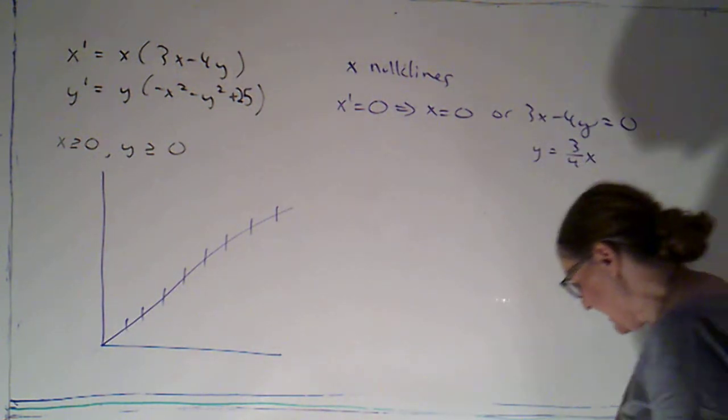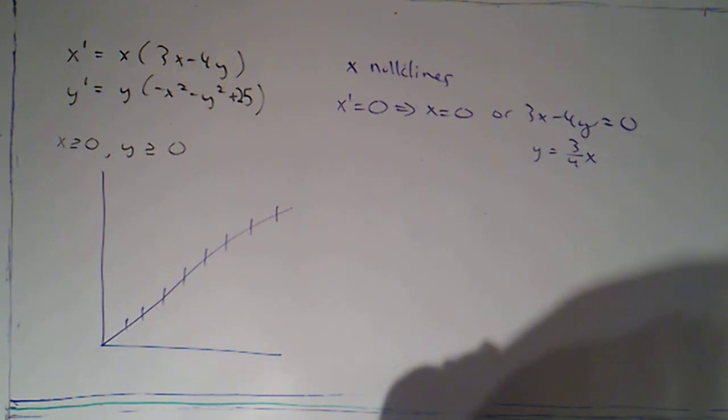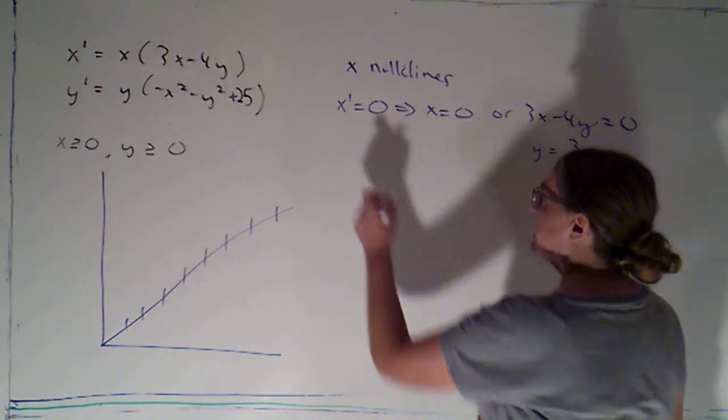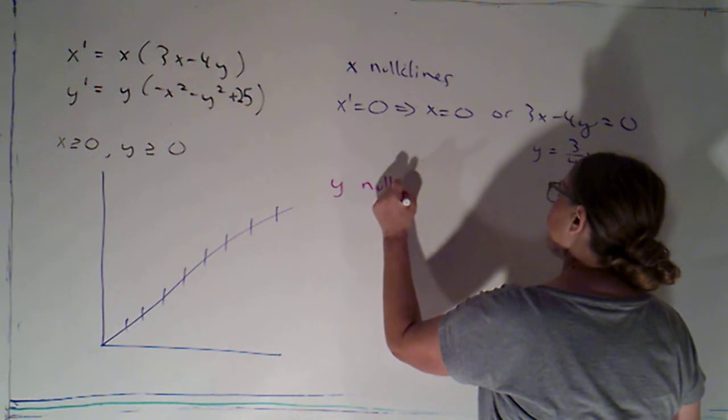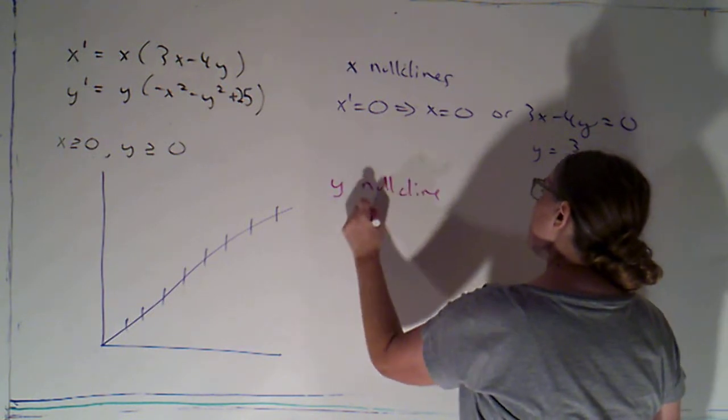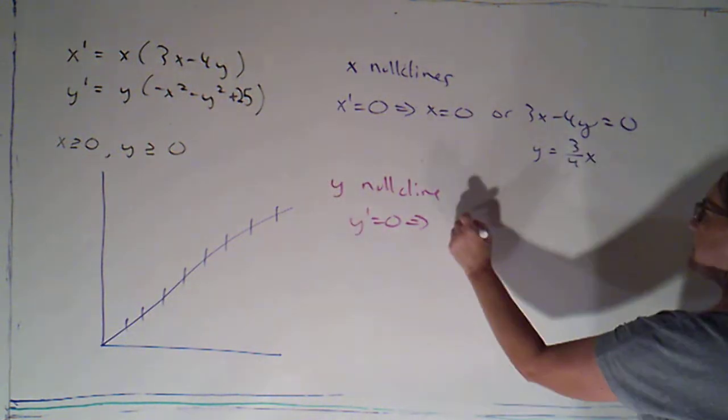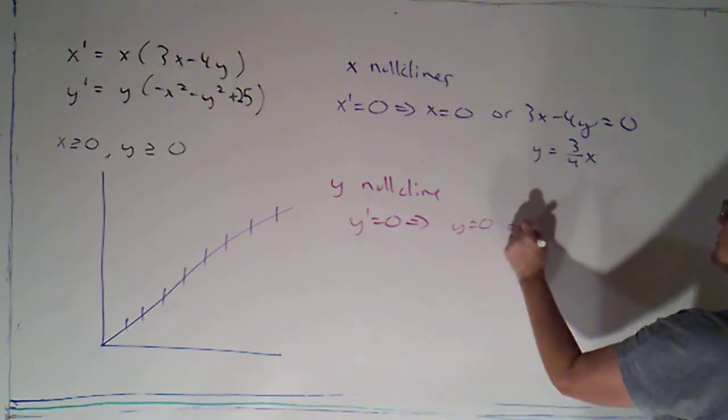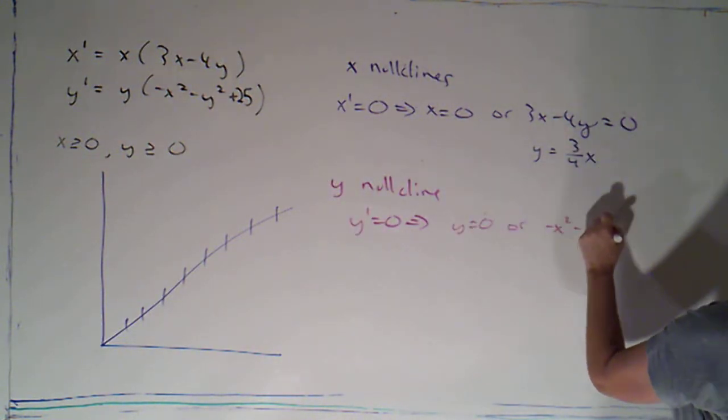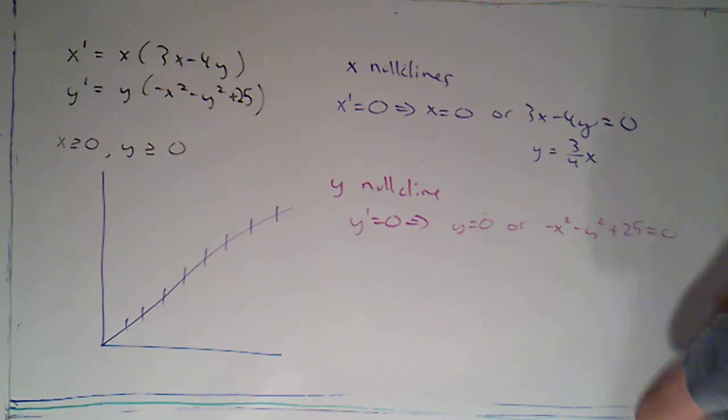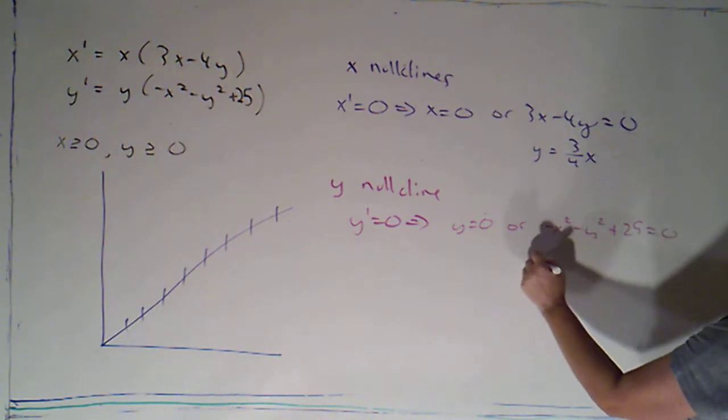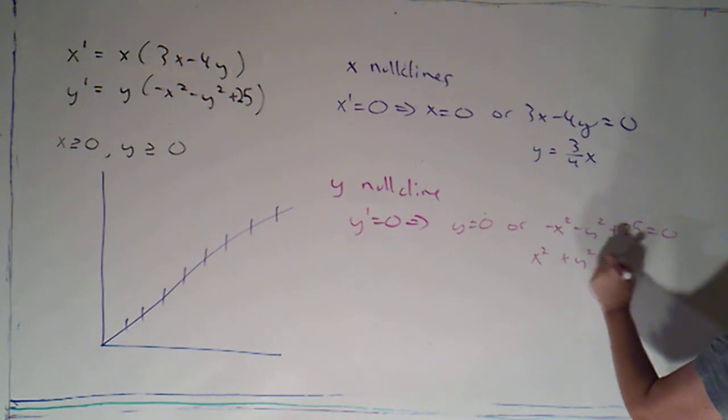So let's take a look now at our y nullclines. So if I have a y nullcline, that's going to mean that y prime is zero. So the two factors of y prime are y, so y could be zero. Or negative x squared minus y squared plus 25 could be zero. And just adding over the x squared and the y squared, I get x squared plus y squared is 25.